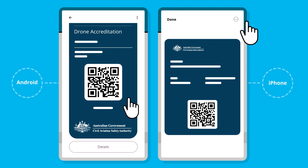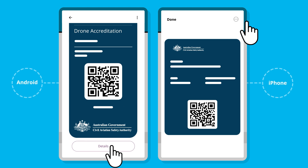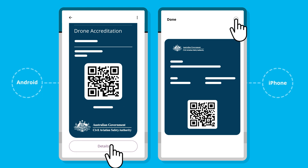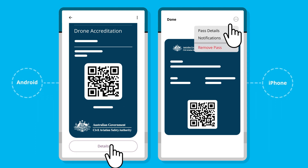For Android, tap on Details. For Apple, tap on the three small dots.